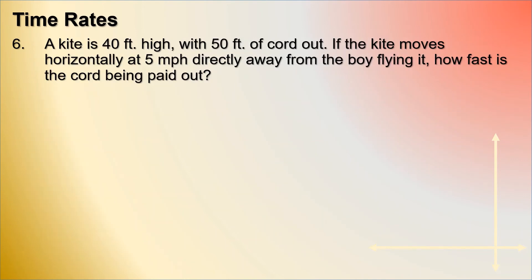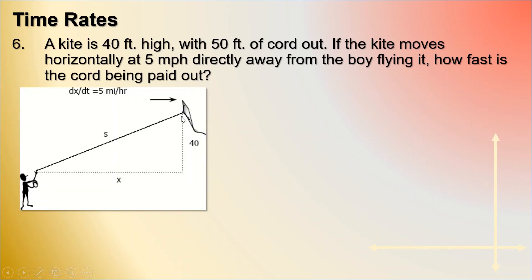A kite is 40 feet high with 50 feet of cord out. If the kite moves horizontally at 5 miles per hour directly away from the boy flying it, how fast is the cord being paid out? Let x be the horizontal distance and s be the length of the cord. The height is fixed at 40 feet, and dx/dt equals 5 miles per hour. We need to find ds/dt.